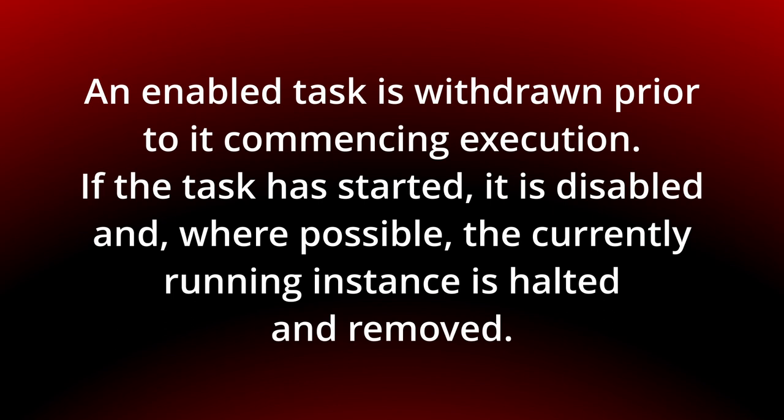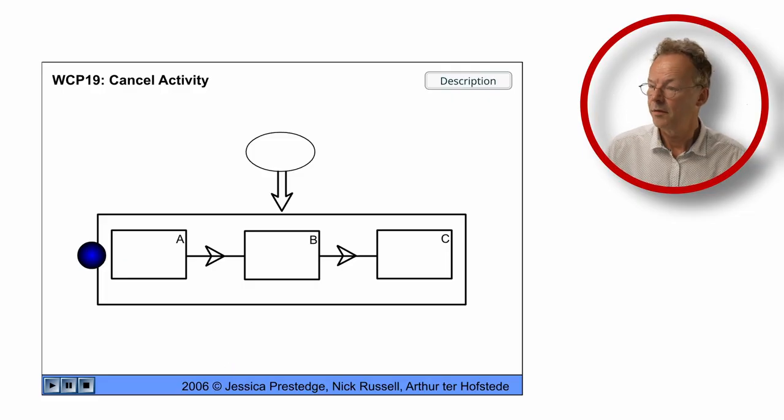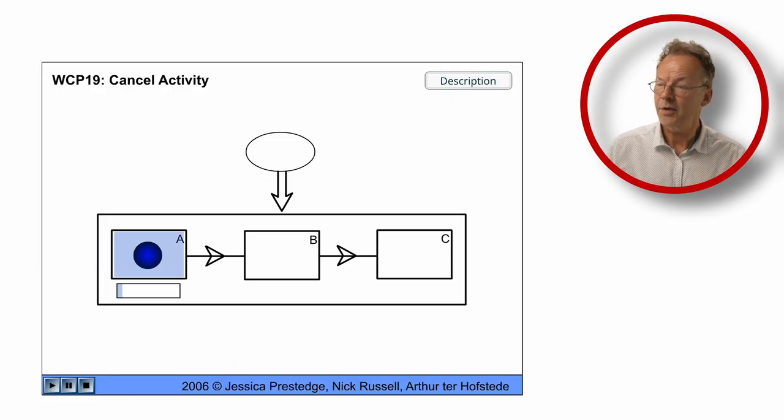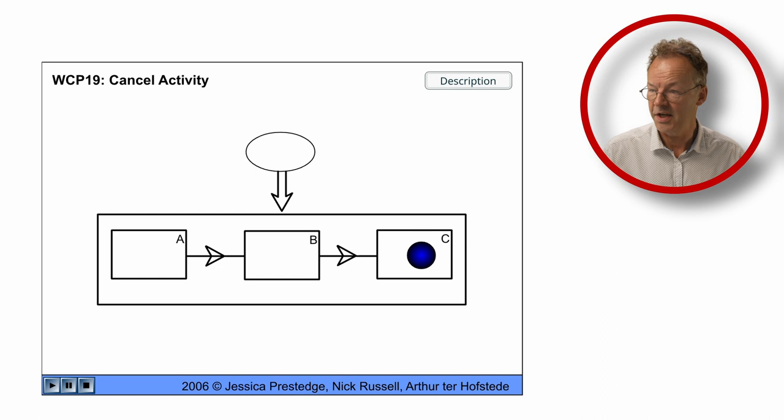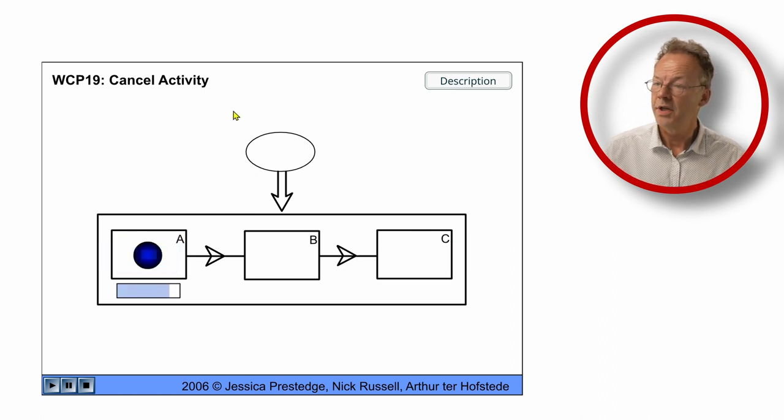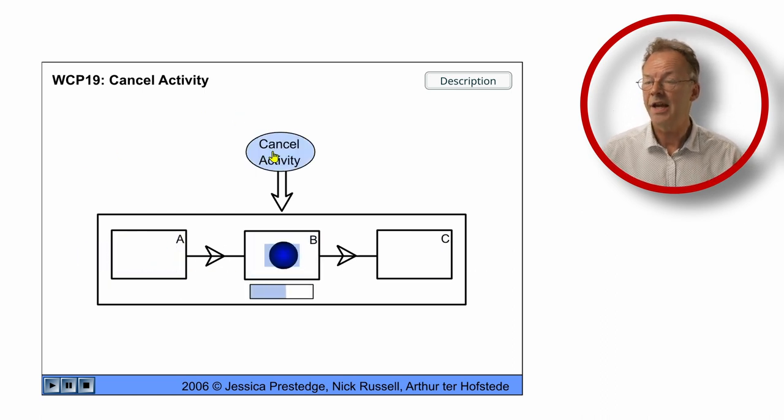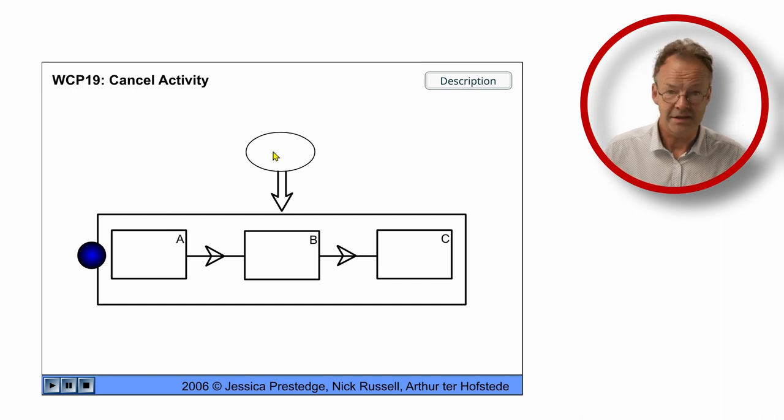You can see the behavior in the original flash animation. So here in the flash animation we start with A and while there is B we have the cancel activity which we don't use in this case, and in the next case we use the cancel activity and B and C are cancelled.